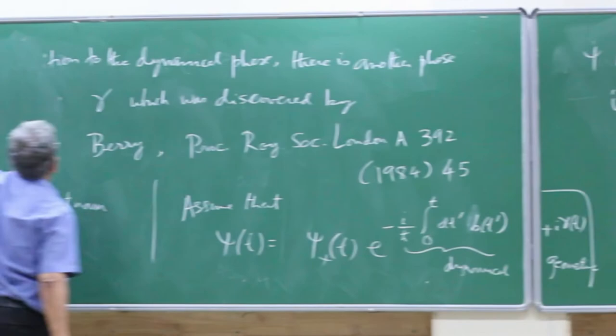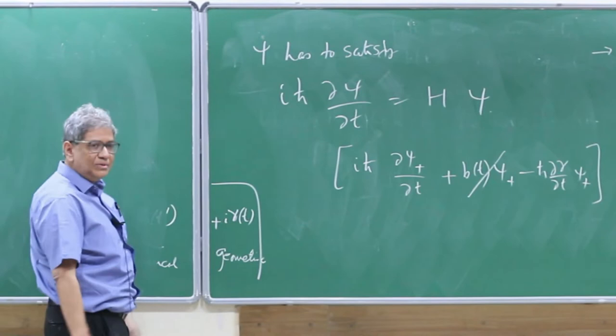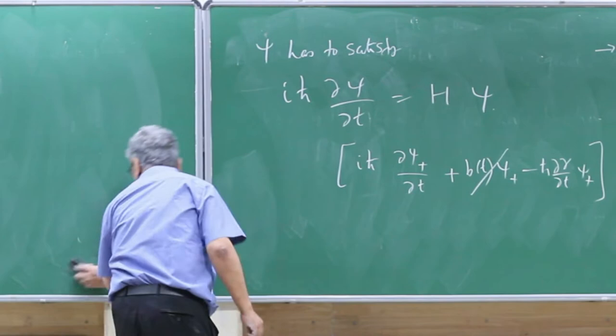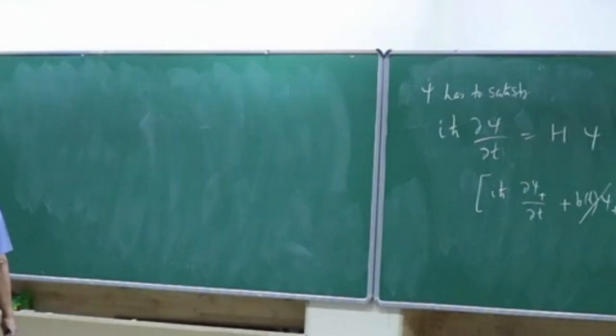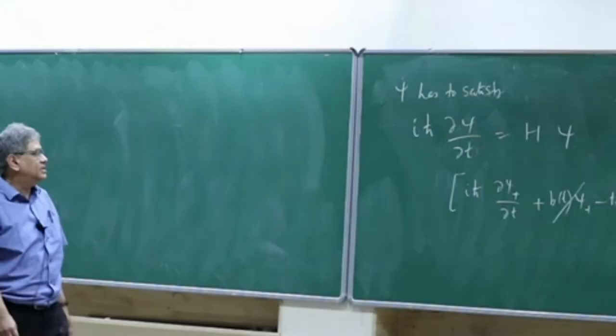A student asks about the logic of introducing the γ phase. The response: let us put it in and see what happens — if it turns out to be zero, fine. You always have to try new things. One phase factor is enough; you can include everything in γ.